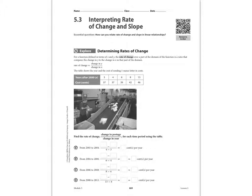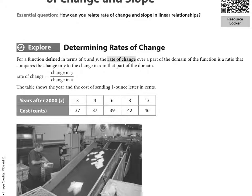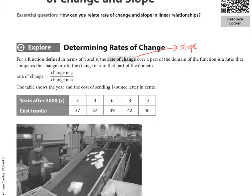The first vocab term is rate of change. The rate of change is how much something is changing with respect to x and y. When I talk about rate of change or slope, I am talking about the same exact thing — I use those interchangeably.